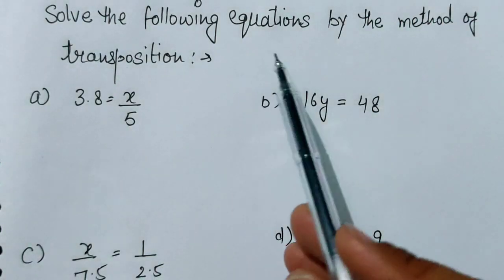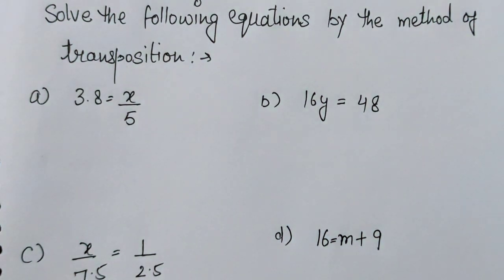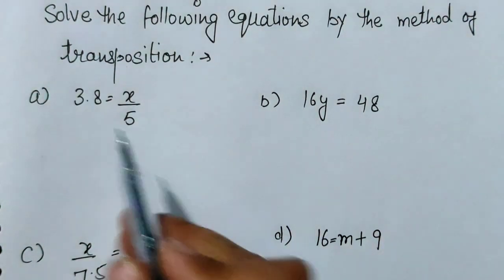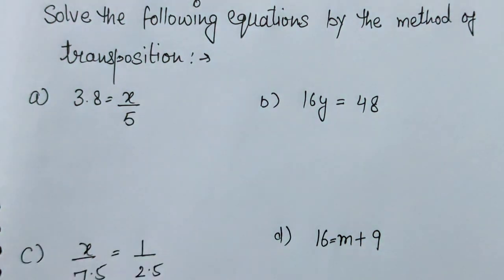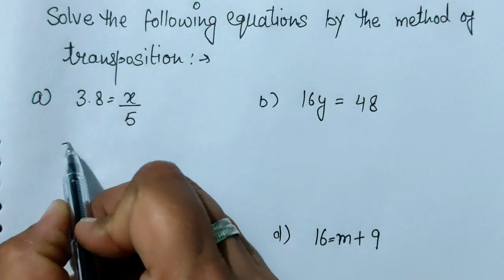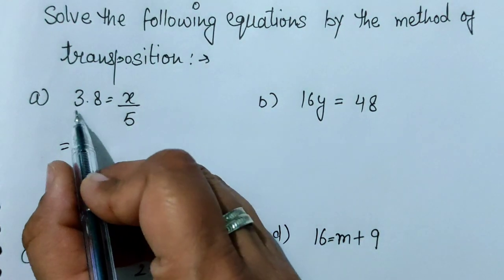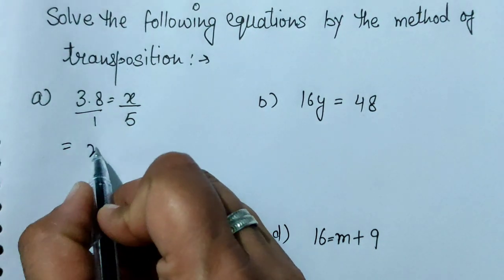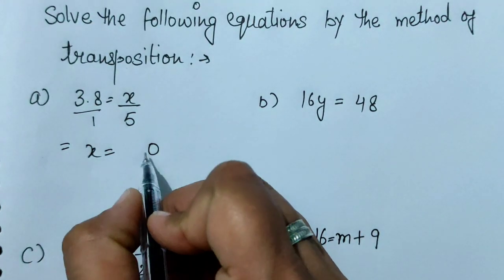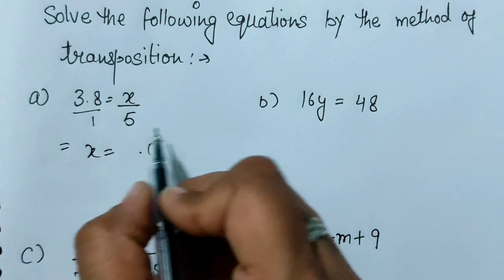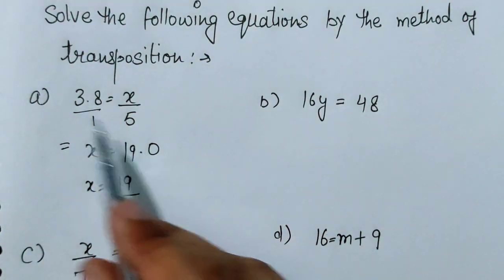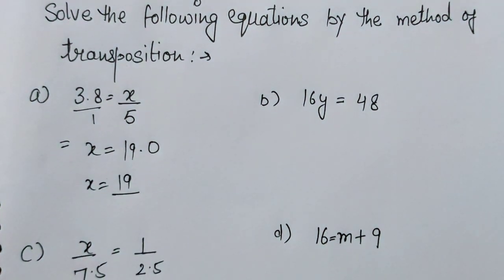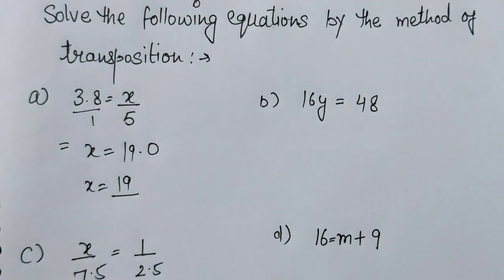Next question: solve the following equation by the method of transposition। Transposition का मतलब है जब हम numbers या variables को equal के इधर transfer करते हैं। X की value find out करने के लिए cross multiply करेंगे: 4×4 = 15 + 4 = 19। So X की value 19 आ गई। इस तरीके से equal के इधर numbers को ले जाना ही transposition कहलाता है।